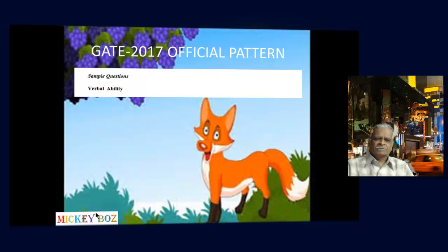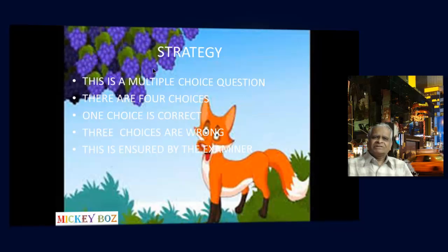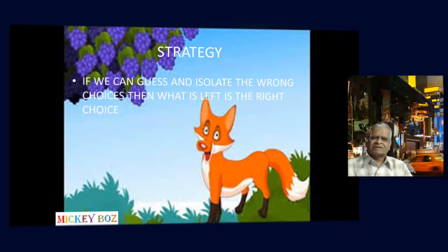Here are some sample questions in verbal ability, GATE 2017 official pattern. Sample question 1: Choose the appropriate answer to complete the following sentence — 'To those of us who had always thought him timid, his ___ came as a surprise.' Four choices A, B, C, D are given. This is a multiple choice question with one correct choice and three wrong choices. If you can guess and isolate the wrong choices, then what is left is the right choice.